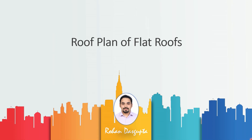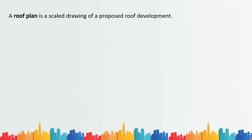Hi everyone, this is Rohan. In this video I'm going to discuss the roof plan of flat roofs. A roof plan is a scale drawing of a proposed roof development, meaning this drawing has to be drawn before the roof is constructed. All the details we are going to see in this drawing are directly going to be used while constructing the roof. The preferred scale of a roof plan is 1:100, or the same scale as the floor plans.